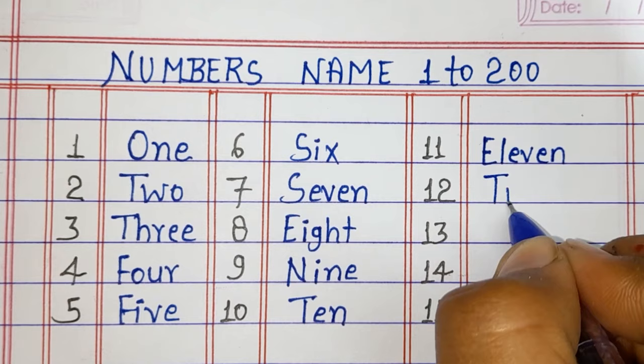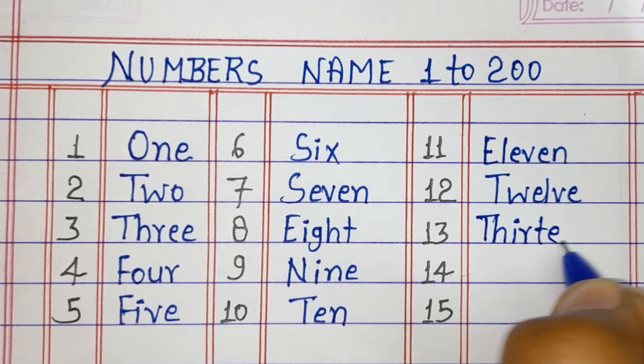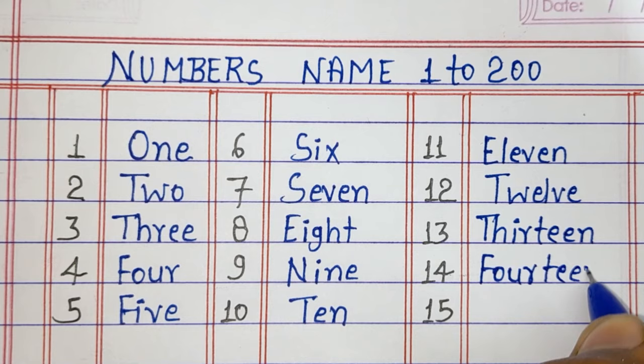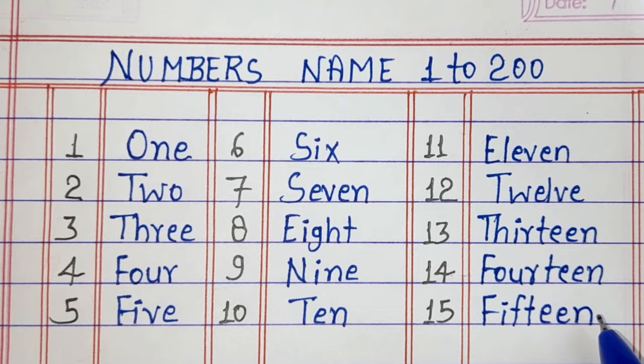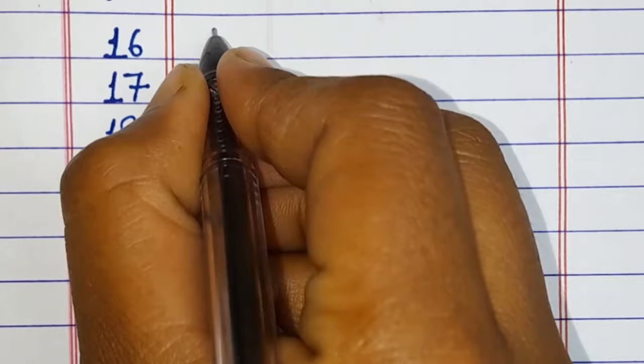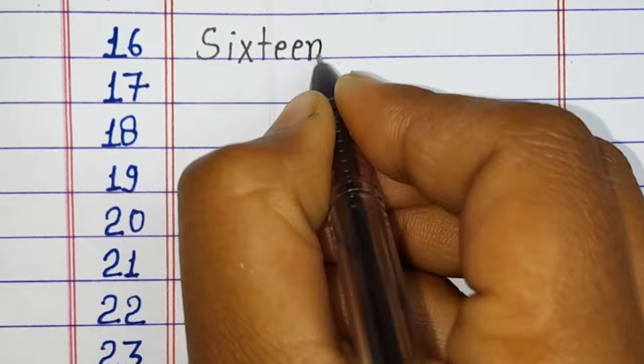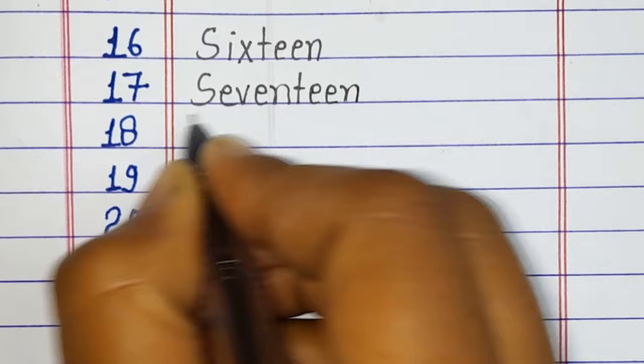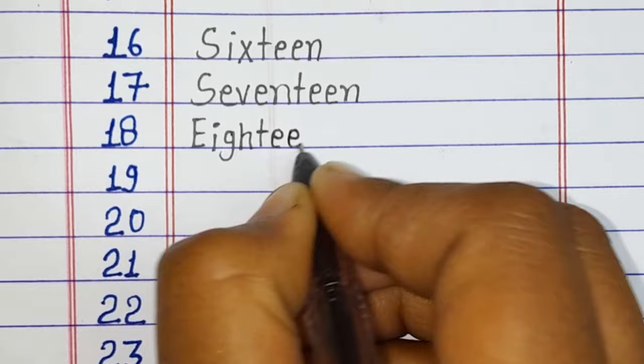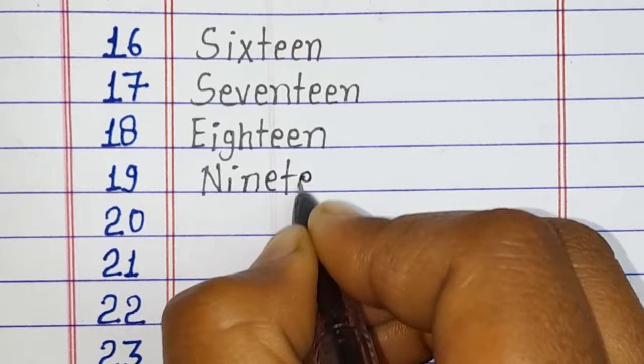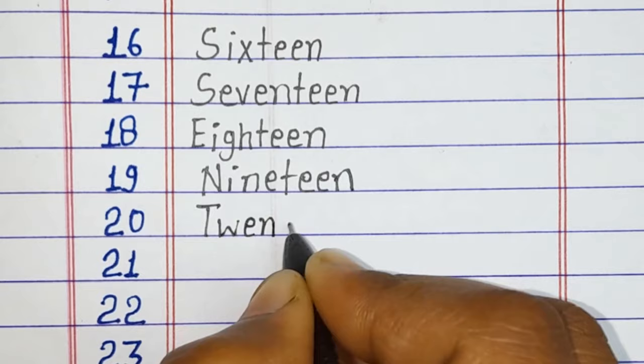Twelve (T-W-E-L-V-E), 12. Thirteen (T-H-I-R-T-E-E-N), 13. Fourteen (F-O-U-R-T-E-E-N), 14. Fifteen (F-I-F-T-E-E-N), 15. Sixteen (S-I-X-T-E-E-N), 16. Seventeen (S-E-V-E-N-T-E-E-N), 17. Eighteen (E-I-G-H-T-E-N), 18. Nineteen (N-I-N-E-T-E-E-N), 19. Twenty (T-W-E-N-T-Y), 20.